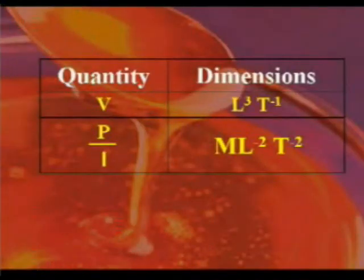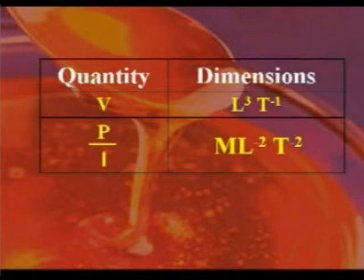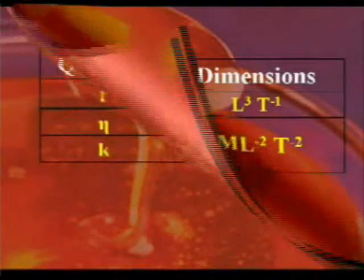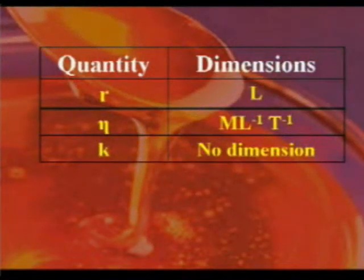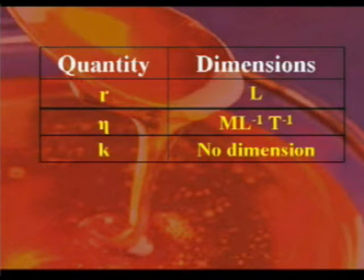The dimensions of each quantity are: V (volume per second) has dimensions L³ T⁻¹; pressure gradient P by l has dimensions M L⁻² T⁻²; r (radius) has dimension L; eta has dimensions M L⁻¹ T⁻¹; and K is a constant, so it has no dimension.